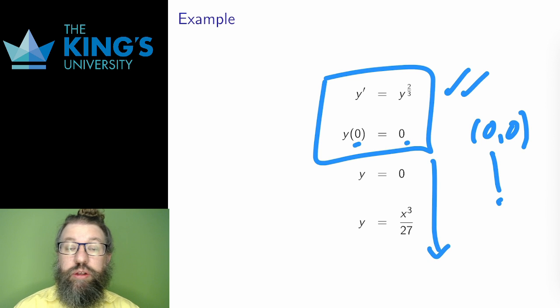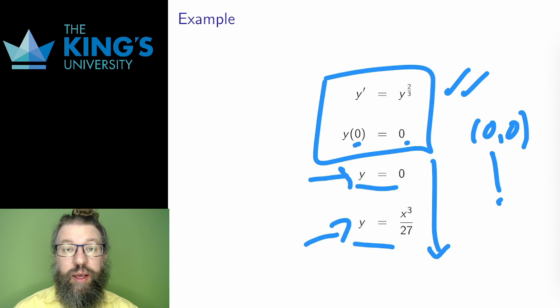It turns out that there are two solutions to this initial value problem. The constant y equals 0, and the cubic y equals x cubed over 27. Feel free to check them, or solve this as a separable equation to find the second solution. So in this case, the solution is not unique. The conditions of the Peano existence theorem are satisfied, which means that at least one solution exists, but it could be more than one. The Peano theorem doesn't tell us anything about uniqueness.